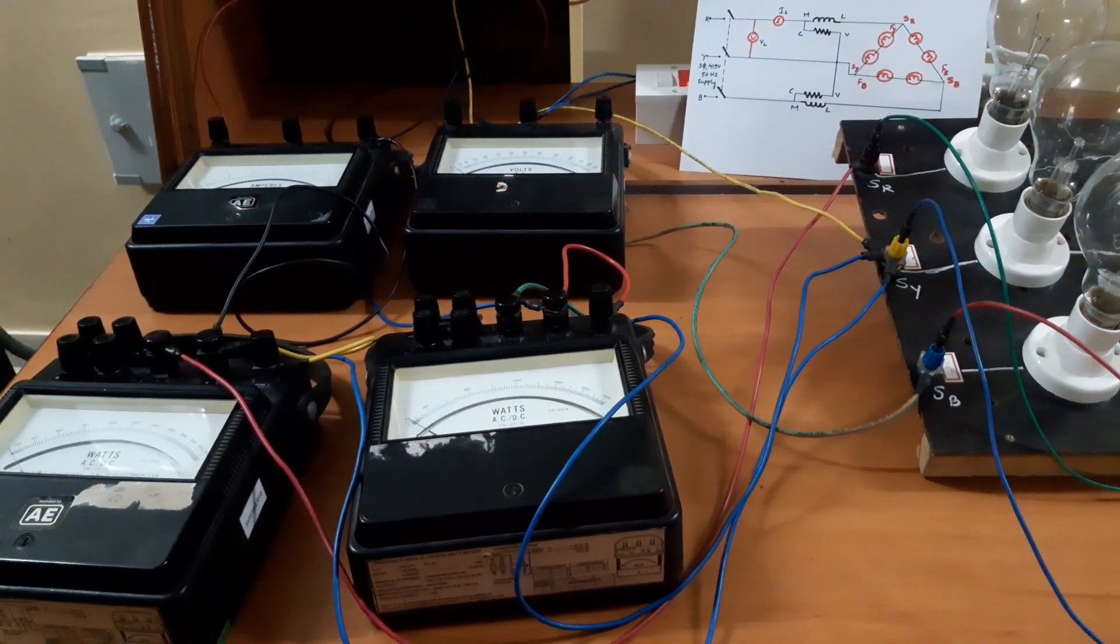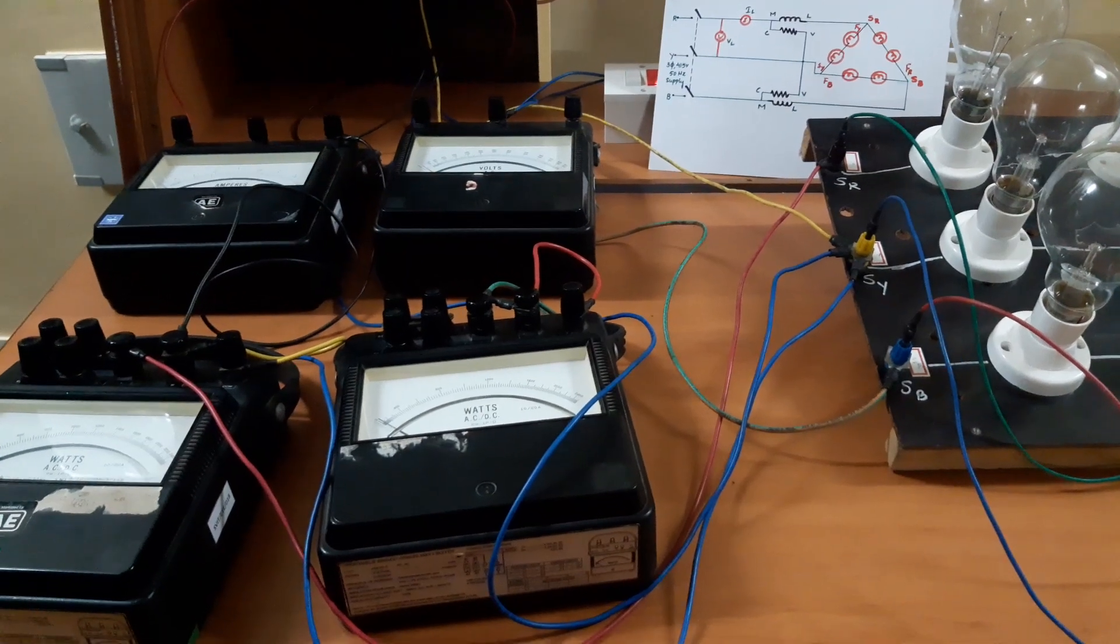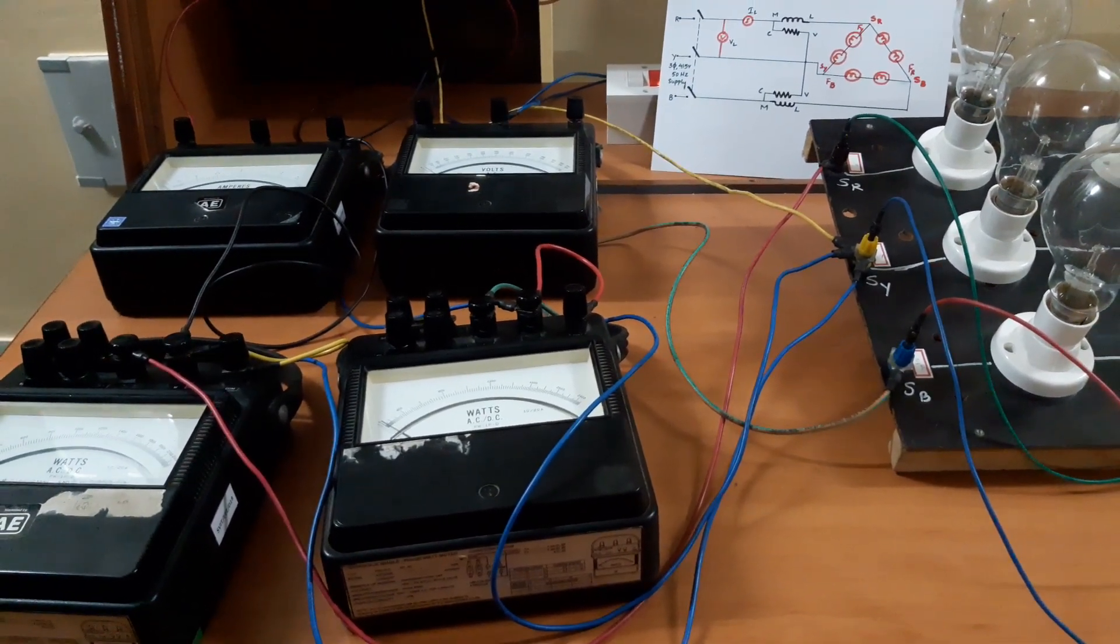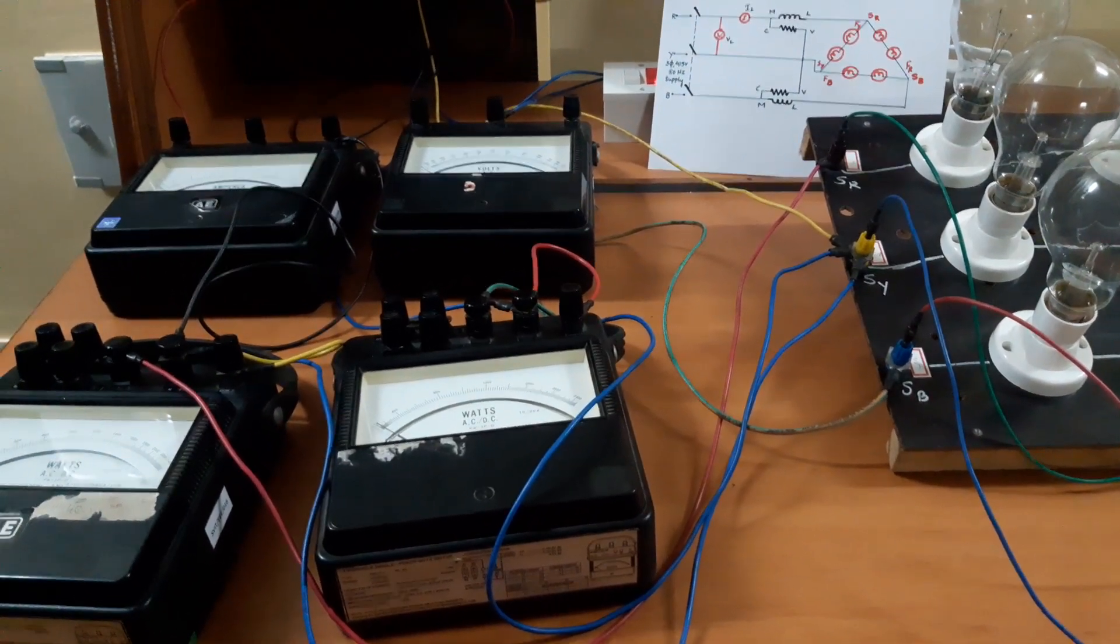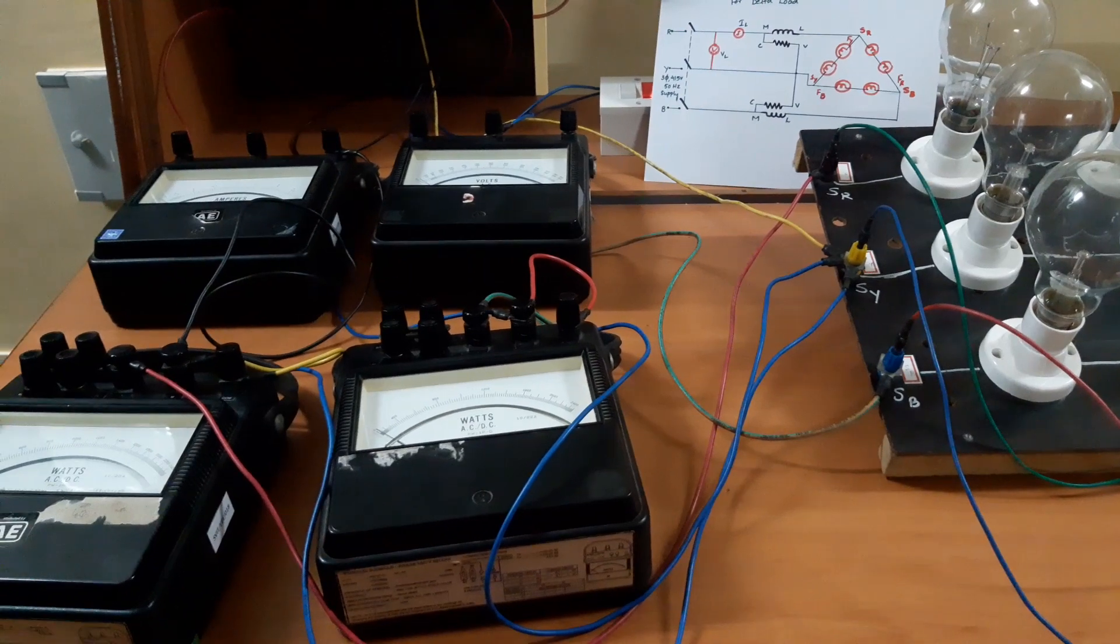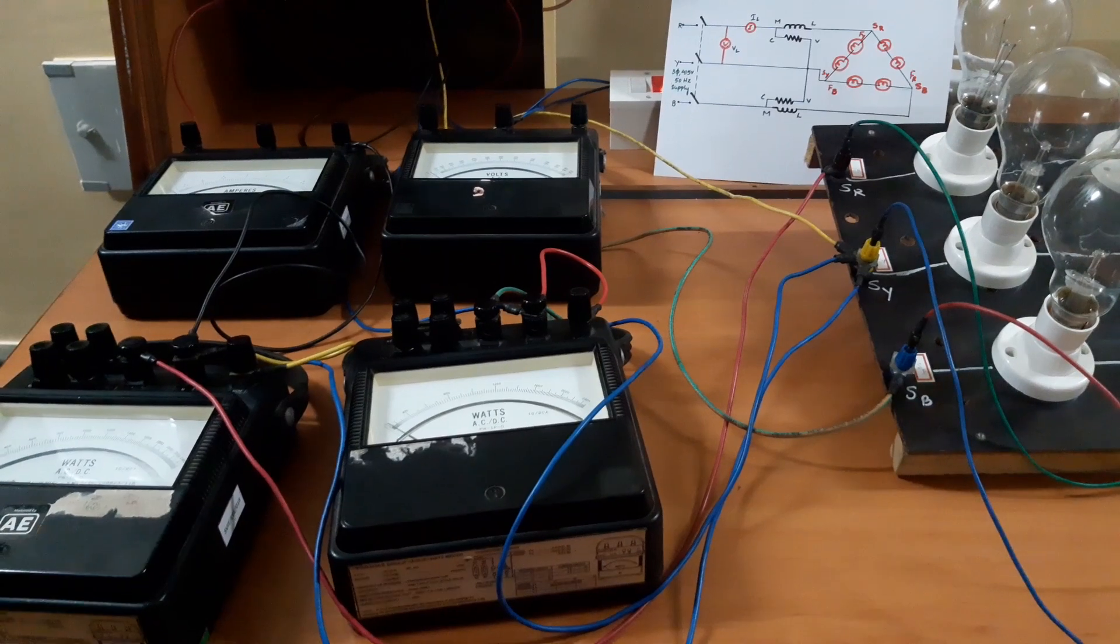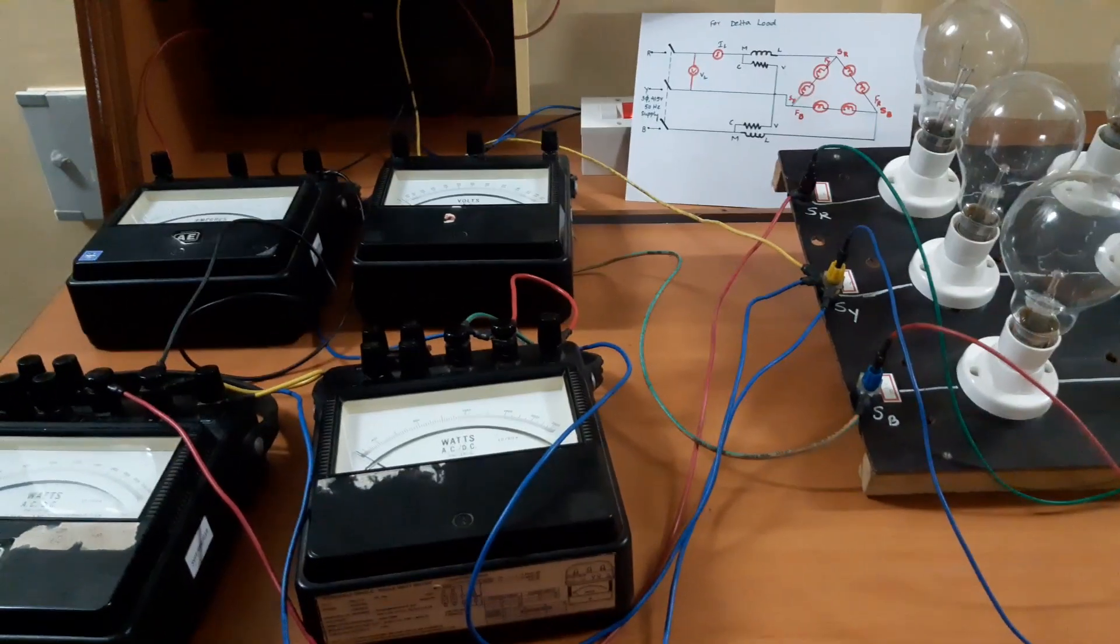This method is applicable for both balanced and unbalanced loads. Only 2 wattmeters are sufficient to measure the total three phase power. We do not need an extra wattmeter to do the same job, so we are saving on devices. Total reactive volt amperes can be obtained using 2 wattmeter readings for balanced load. This is the experiment of measuring three phase power using 2 wattmeter method.